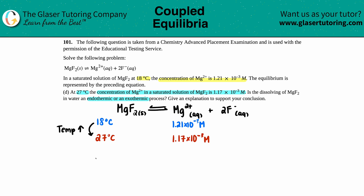So as temperature increased, what happened to that concentration of Mg²⁺? Usually we can get away with just looking at the exponent, but since both are times 10 to the negative 3, I do have to look at the actual numbers: 1.21 versus 1.17. The higher number is obviously higher and the lower one is lower — so I went from 1.21 to 1.17, the amount decreased.